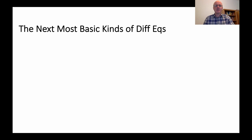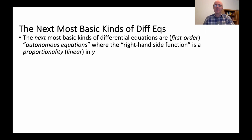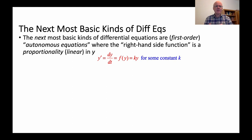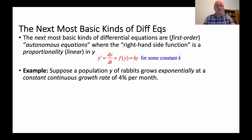The next most basic kind are first-order autonomous equations, where the right-hand side function f is a function of y, not t — and specifically a proportionality in y, linear in y: y' = dy/dt = f(y) = ky for some constant k. This is very different — it's a function of y on the right-hand side instead of t. This is where it can start to get confusing: is y a variable or a function? I want to make that distinction clear.